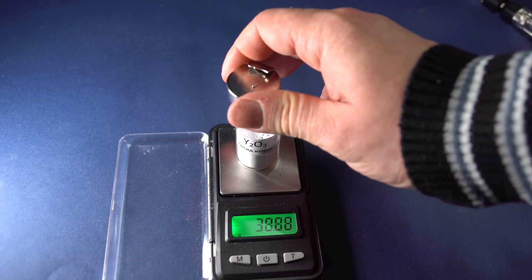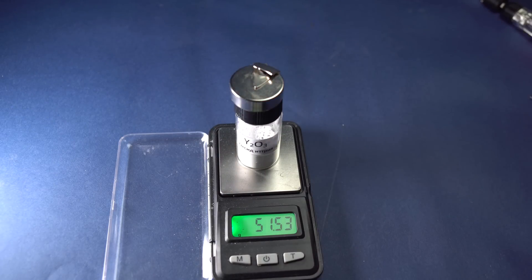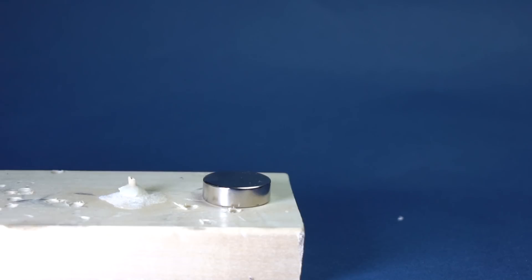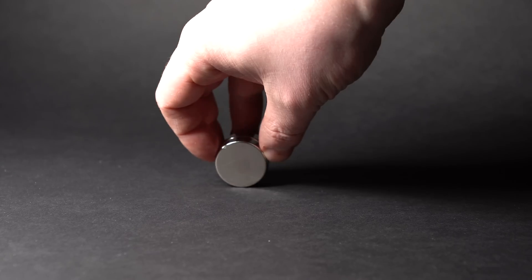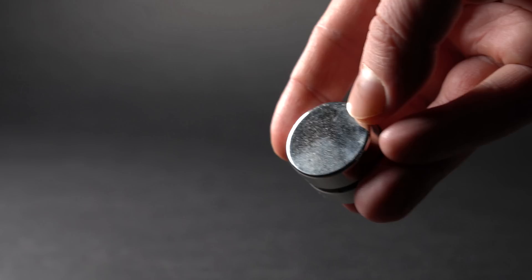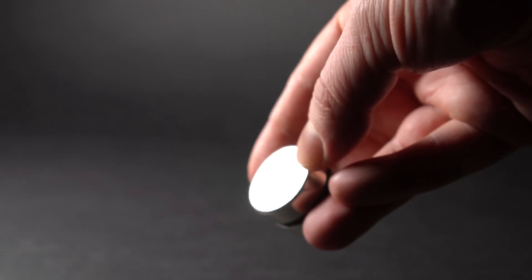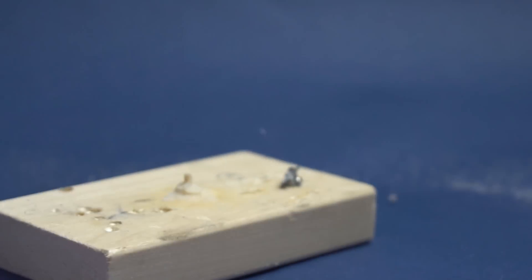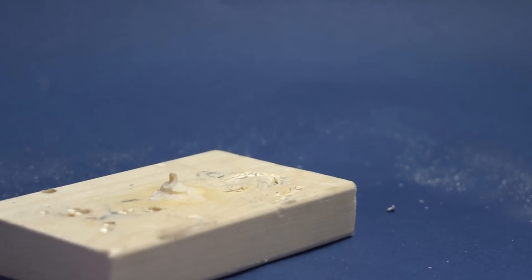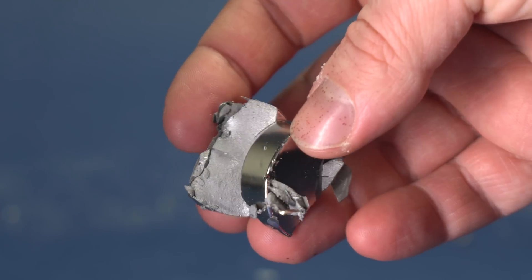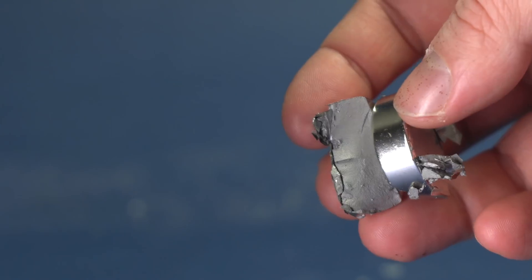First I need to dissolve this small magnet in nitric acid. To speed up the process I decided to smash the magnet with a hammer. Don't be fooled by the look of these magnets which seems to be as hard as iron. After a couple of blows with a hammer such a magnet easily fragments into pieces because it consists of a fragile alloy which is also easily oxidized in the air.